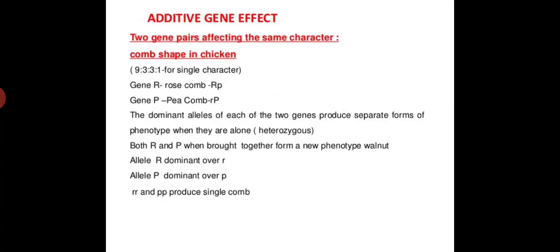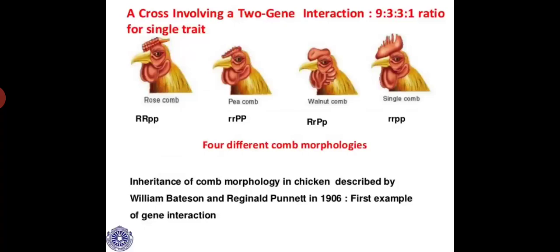There is also a concept called additive gene effect. Two gene pairs affecting the same character — for example, comb shape in poultry or chicken or fowls — this is what I already explained to you. Now let us go through a cross involving two-gene interaction producing a 9:3:3:1 ratio for a single trait. Here you can see the different comb patterns in fowls: this is the Rose comb, this is the Pea comb, this pattern is called Walnut, and this pattern is called single comb. These are the four different comb patterns or morphologies in poultry birds.